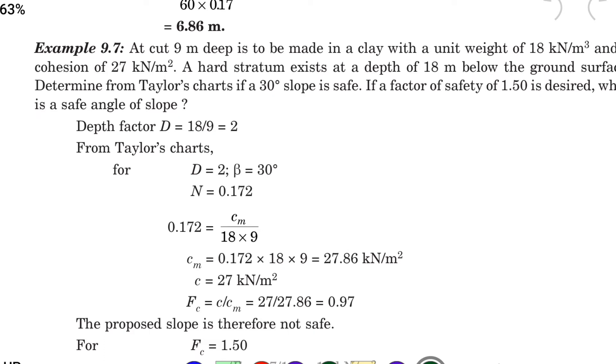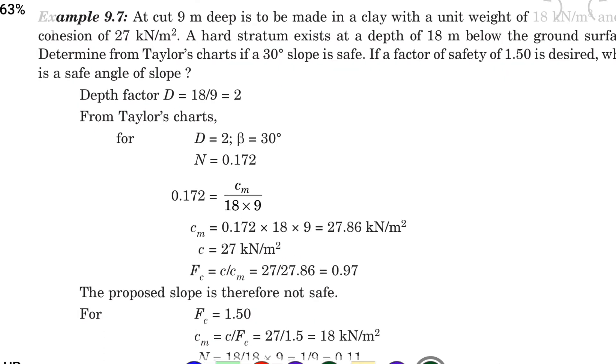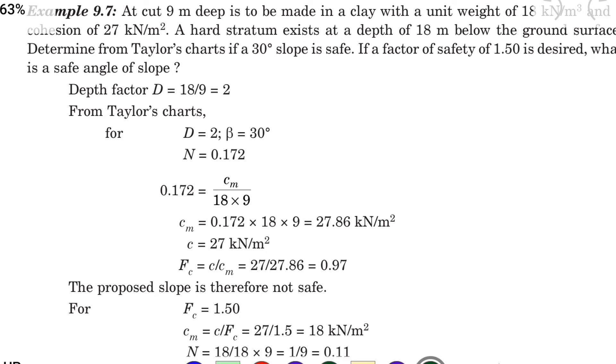So 18 by 9 equal to 2. So from the Taylor chart D equal to 2 and beta angle is 30 degree that is given. So for that N values we can take N equal to 0.172.